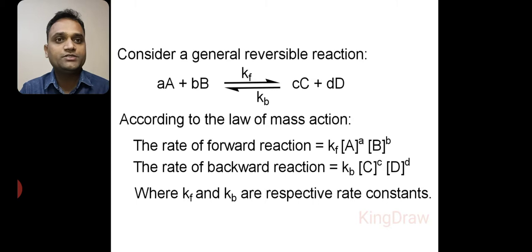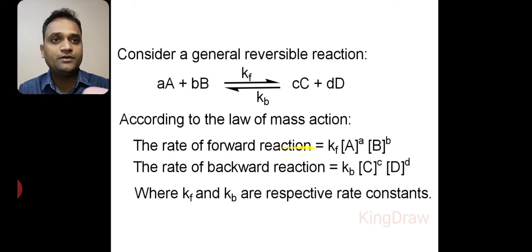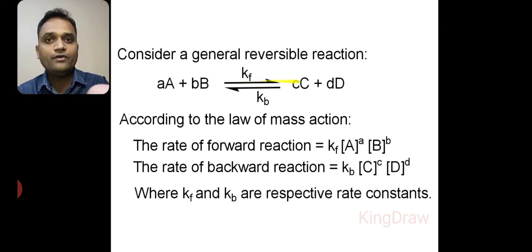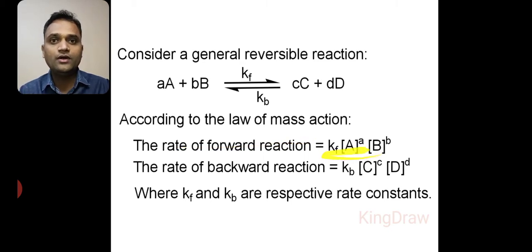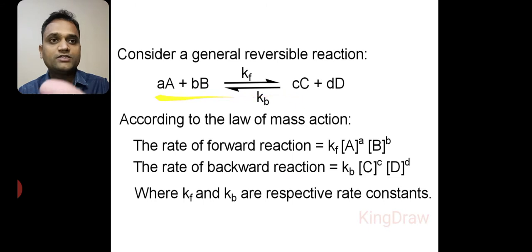For this reversible reaction, according to the law of mass action which we studied in the last lecture, the rate of forward reaction is equal to Kf into [A] raised to a into [B] raised to b. Similarly, the rate of backward reaction is equal to Kb into [C] raised to c into [D] raised to d.